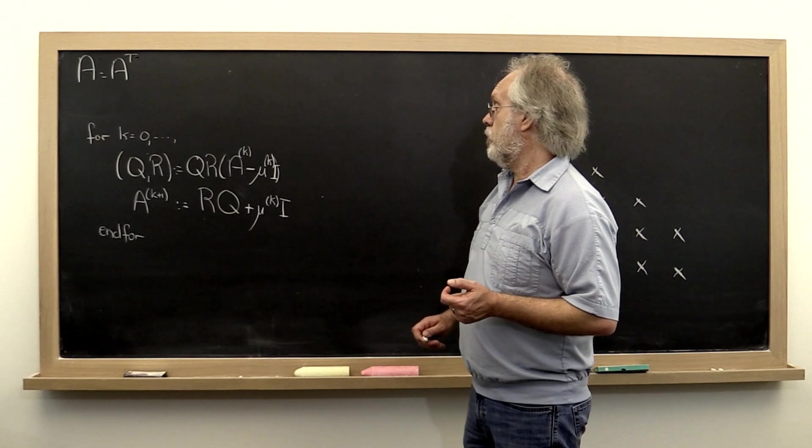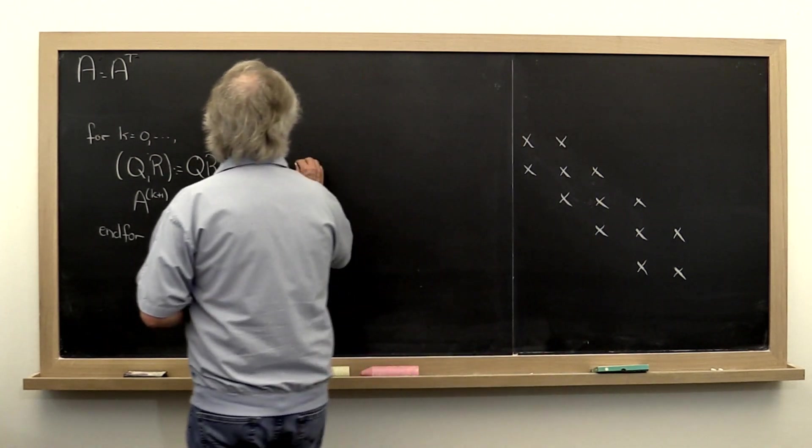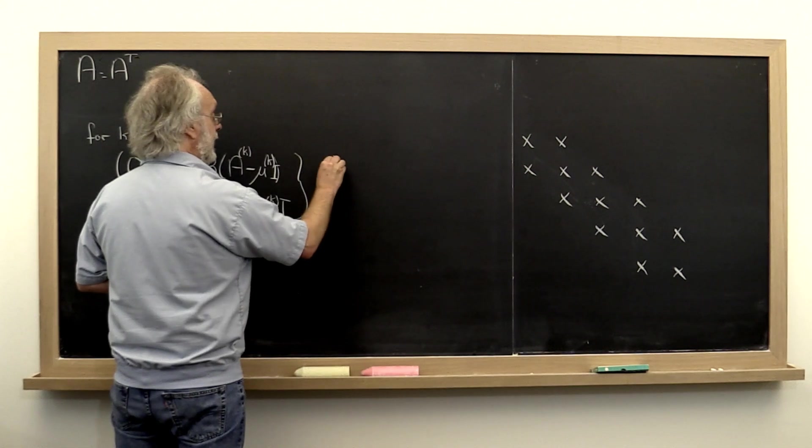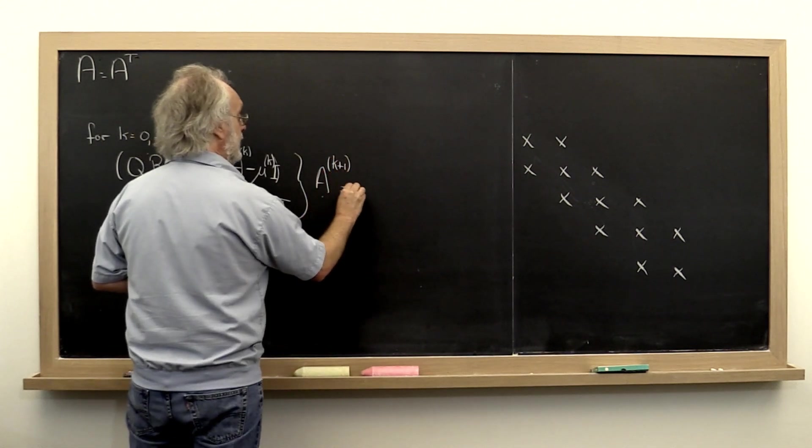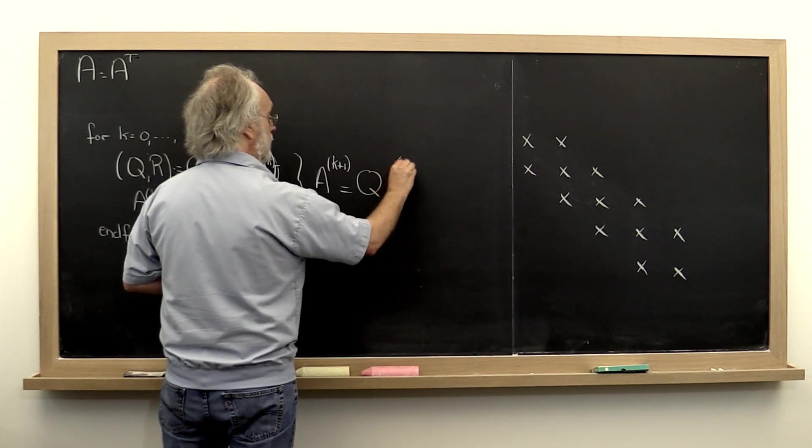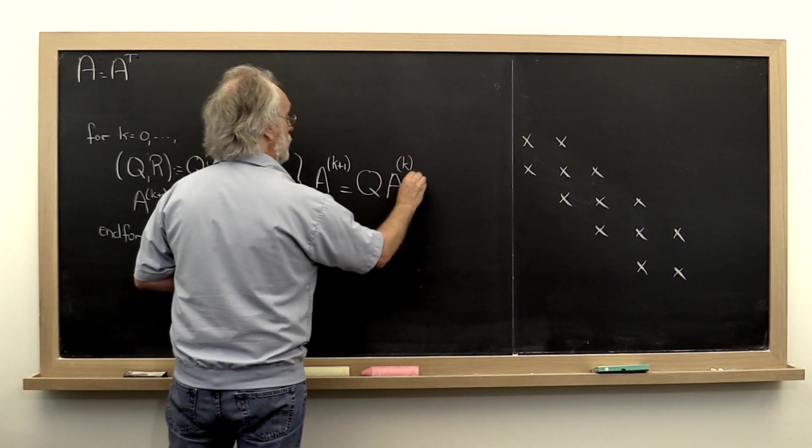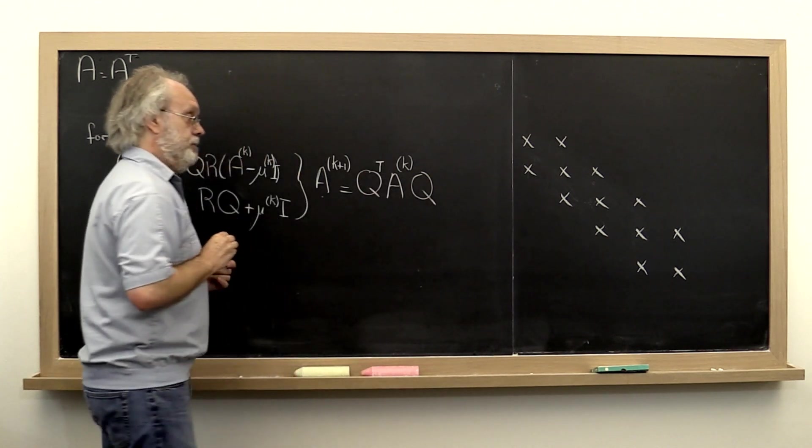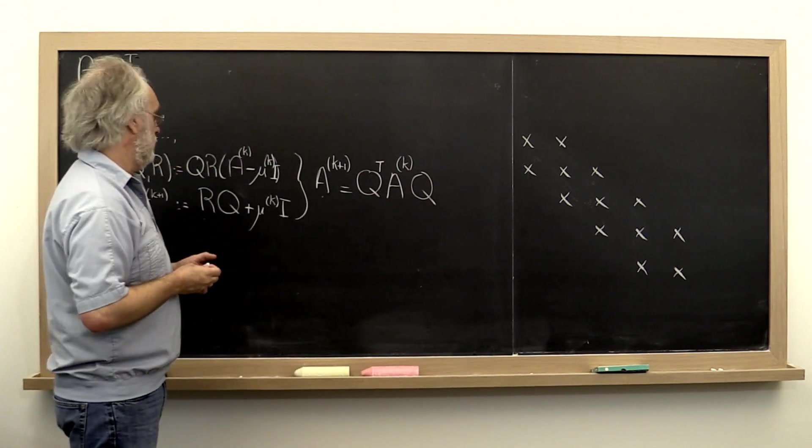Now importantly, if you work it out, you know that the new iterate is actually equal to Q times the last iterate times Q transpose right here. And we can prove that. It's not that hard to see.